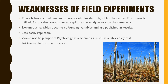Weaknesses of field experiments: there is less control over extraneous variables, which may bias the results. For example, if Hofling's study were repeated in a different culture — say a collectivist rather than an individualist culture — we can't be sure the results would be the same. Extraneous variables can become confounding variables, making the study less easily replicable. Poor replicability does not help support psychology as a science as much as lab testing would, yet field experiments are invaluable in some instances, like Hofling's study.